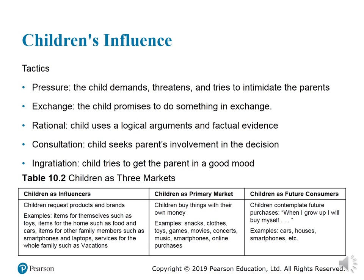The different roles of children as influencers — the text explains some tactics: pressure, exchange, rational, consultation, and ingratiation. Pressure: the child demands, threatens and tries to intimidate the parents. Exchange: the child promises to do something in exchange for getting something from parents. Rational: the child uses logical arguments and factual evidence. Consultation: the child seeks the parents' involvement in the decision. Ingratiation: the child tries to get the parent in a good mood — which is considered the best tactic.